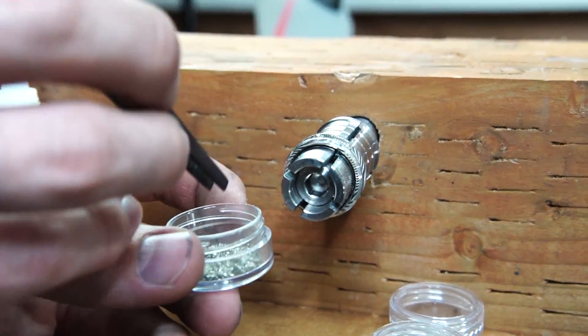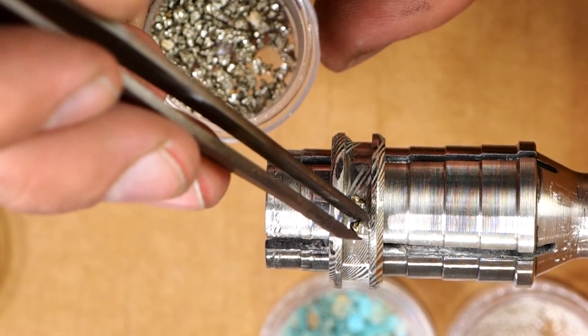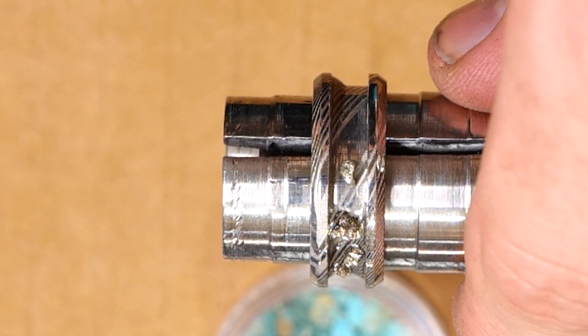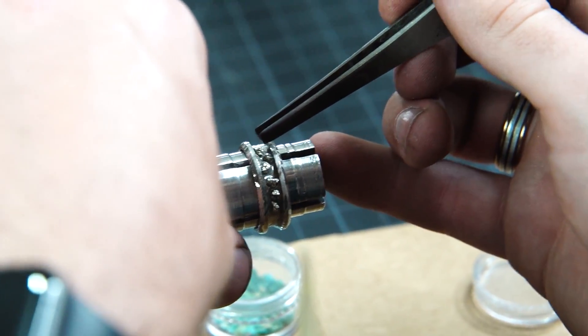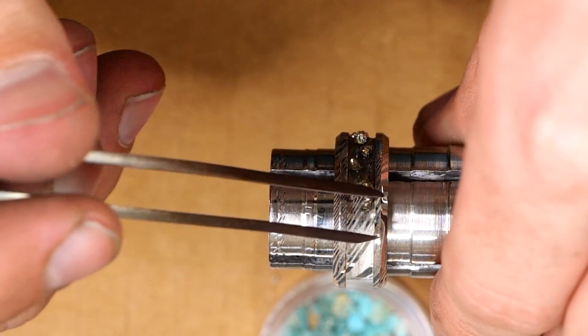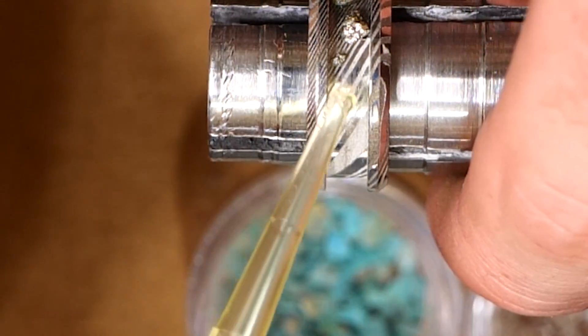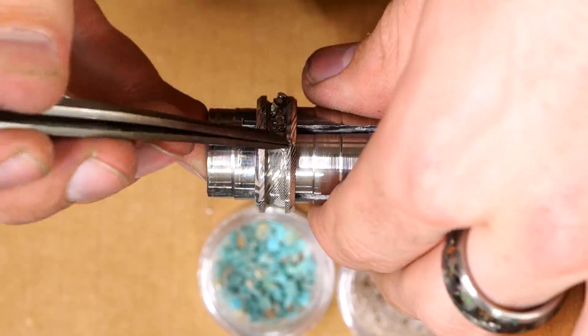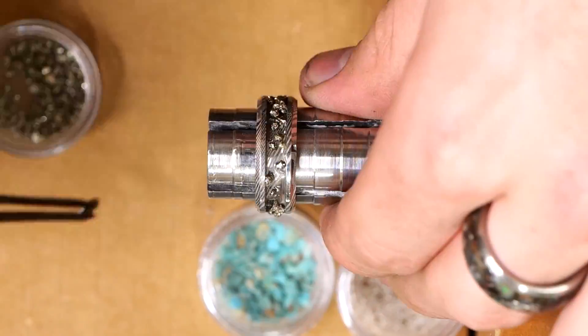Now onto the inlaying. This is going to be fairly straightforward. I'm going to start with my pyrite because I want to pack a ton of that in there. I'm just putting down a small little patch of my medium CA adhesive, and then I'm using my tweezers and I'm placing in the pieces exactly how I want them. There's no real right or wrong way to do this. Just kind of put in as much or as little pyrite as you want, and I just go all the way around the inlay until it's got the look I'm going for.